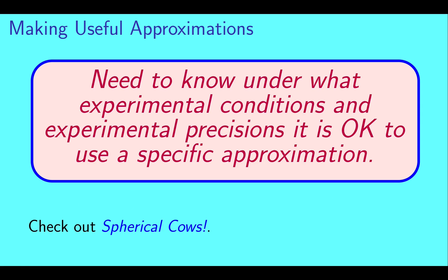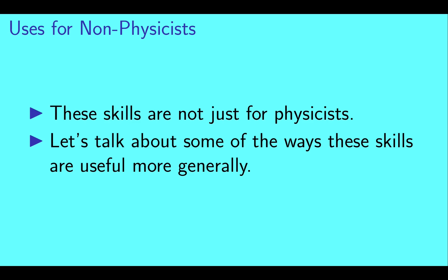More generally, you need to know under what experimental conditions and for what experimental precisions it is okay to use a specific approximation. For more information, you might want to check out the video Spherical Cows. Okay, so we talked about some skills that are important for physicists to have. Now let's talk about how these same skills can be useful to non-physicists.